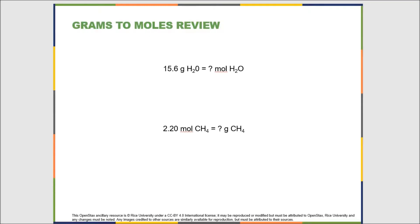In the remaining sections of this chapter, starting with this section, we're going to talk about stoichiometry. Stoichiometry, as mentioned at the beginning of this chapter, is what allows us to predict how much starting materials we need to make a certain amount of product, or how much product we can make from a certain amount of starting materials.